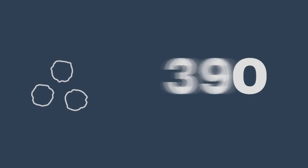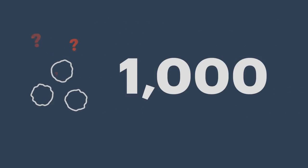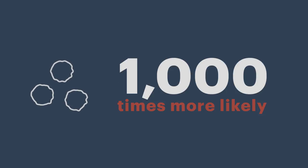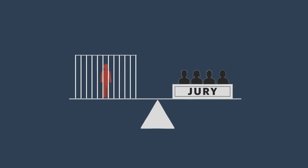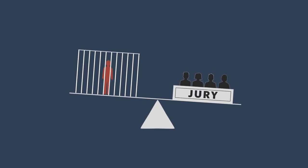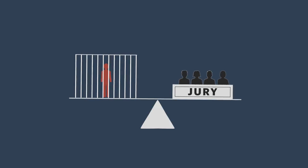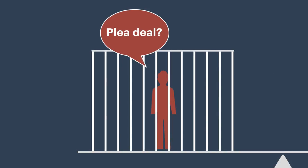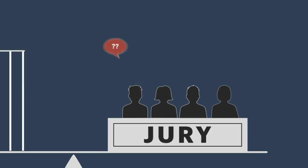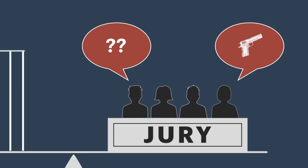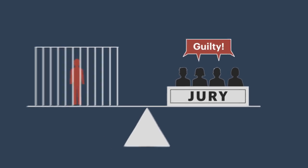So the likelihood ratio might be a thousand, which means it is a thousand times more likely. As you can imagine, this can have a huge impact on criminal cases. John might hear that big number and feel pressured to take a plea deal. A jury might hear that number, not really understand what it means, and think that John's DNA has actually been found on the gun — and now he's guilty.